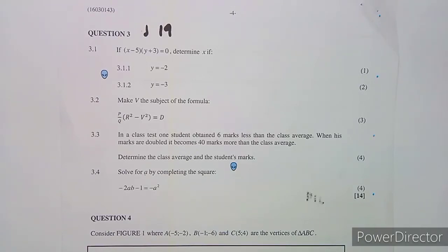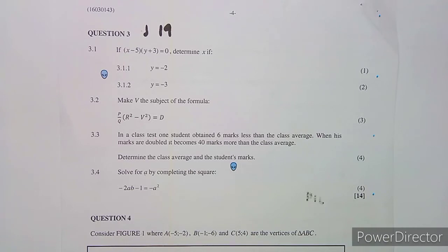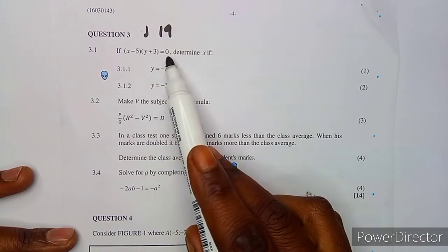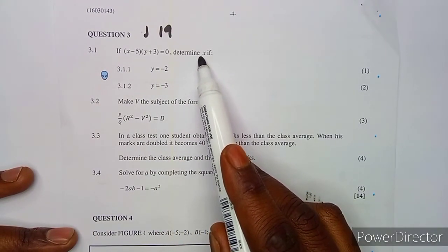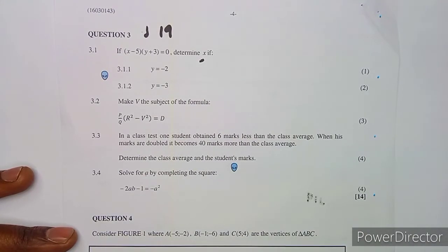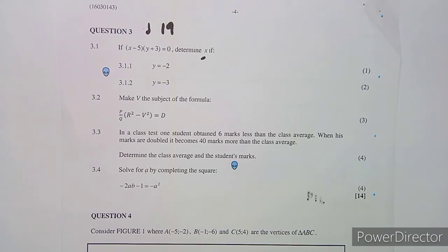Hello guys, welcome back to my channel, Mason African Motives. We are still working on the question paper written in July 2019 for mathematics entry. We are having a continuation on question number three, which involves two brackets equal to zero. We need to determine x when y equals minus two, and when y equals minus three.